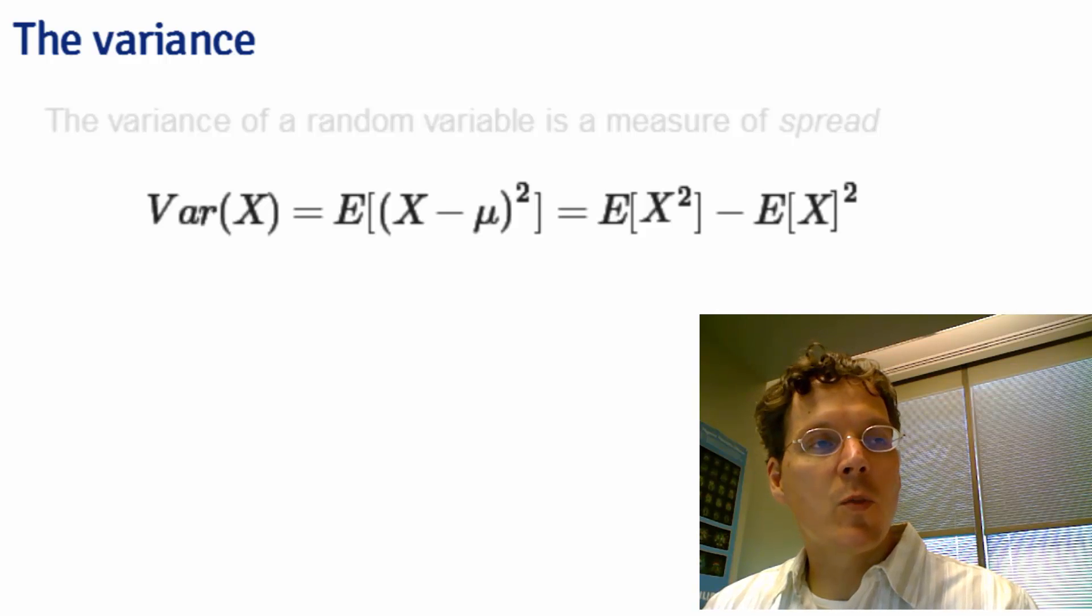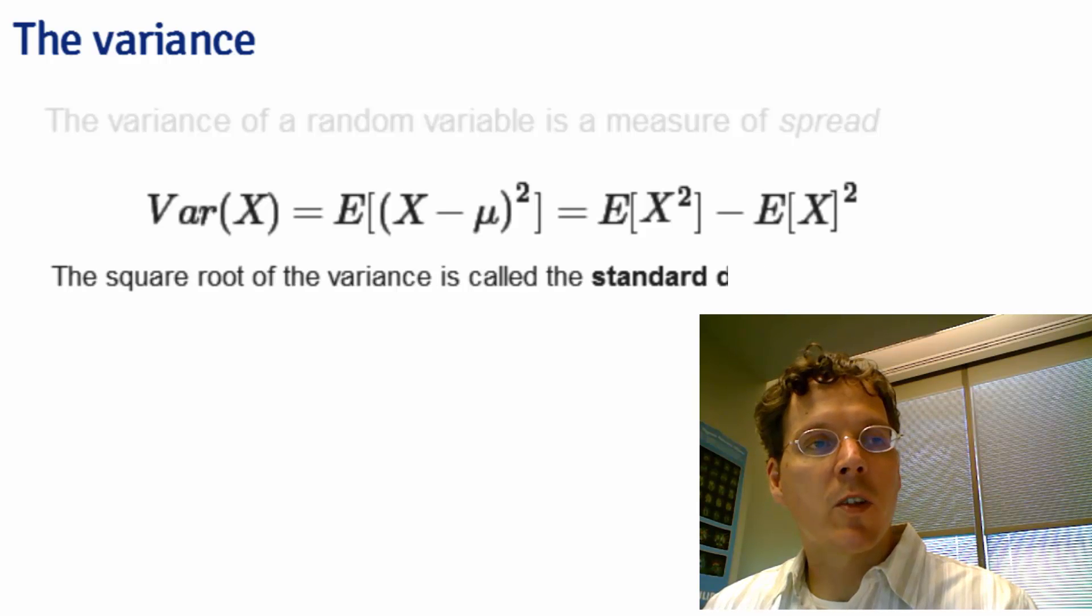Densities with higher variance are more spread out than densities with lower variances, and the square root of the variance is called the standard deviation. The variance is expressed in the unit squared, whereas the standard deviation is expressed in the same units as X, which is quite useful.